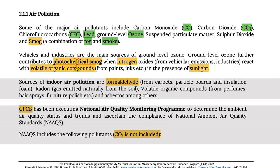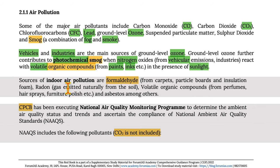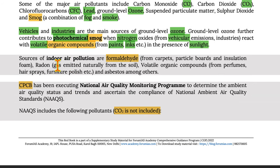Vehicles and industries are the main source of ground level ozone. Ground level ozone further contributes to photochemical smog when nitrogen oxides from vehicular emissions and industries react with volatile organic compounds — e.g. from paint, tanks, etc. — in the presence of sunlight.